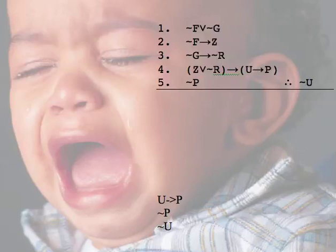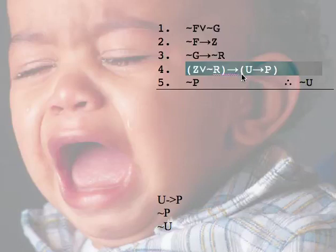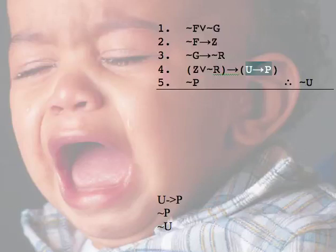Well, I think some of you are probably already recognizing this is just a large conditional statement. And this is just the consequent of this larger conditional statement. Modus ponens tells me that when I have a conditional, if I could satisfy the antecedent, then I get the consequent.